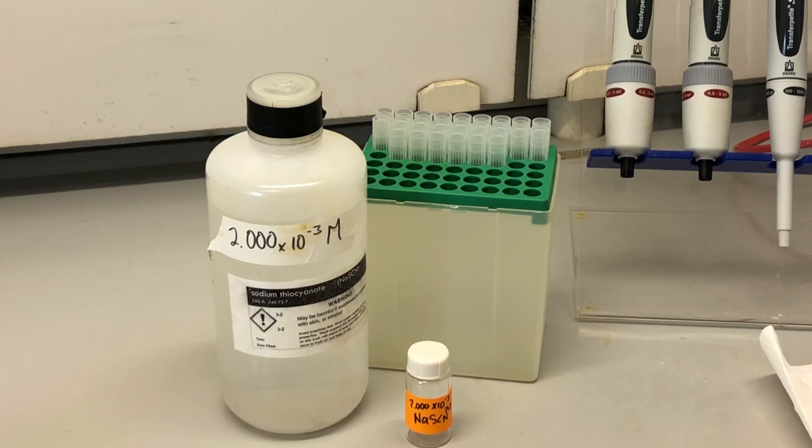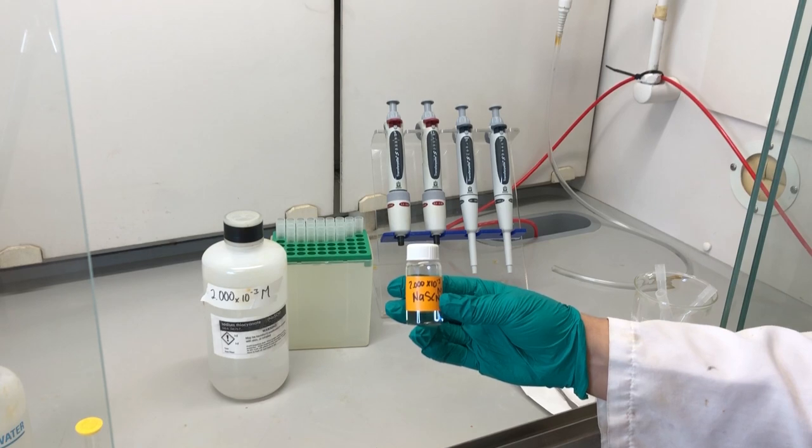Using the appropriately labeled scintillation vial, obtain 5 ml of 2 times 10 to the negative third molar sodium thiocyanate solution located in the chemical fume hood.